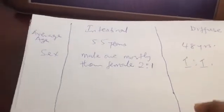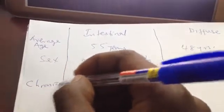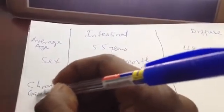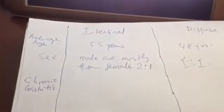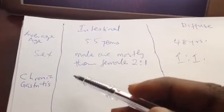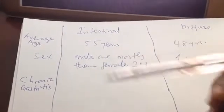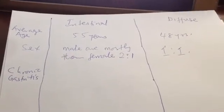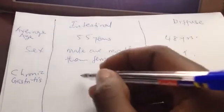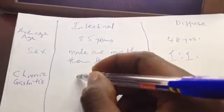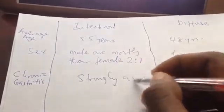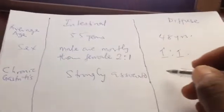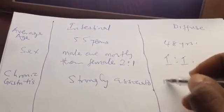While the incidence affecting male and female in the diffuse type is the same — a 1:1 ratio. You can also differentiate them based on association with chronic gastritis. In the intestinal type, it is strongly associated with chronic gastritis, while in the diffuse type it is mostly not associated with chronic gastritis.